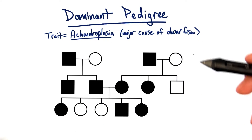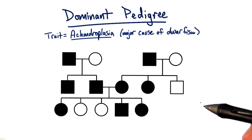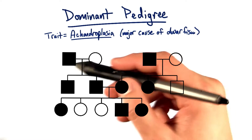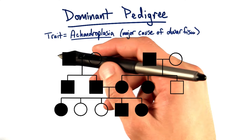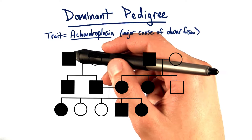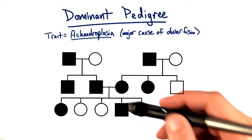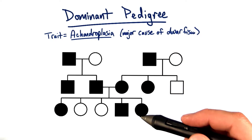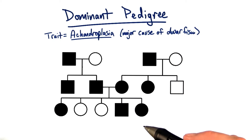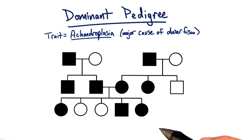In this particular pedigree, you'll notice right away that it affects every generation. We see every generation — from grandparents to parents to children — with affected individuals.